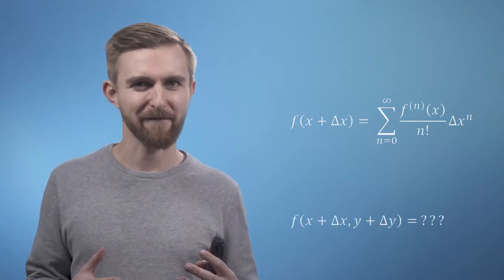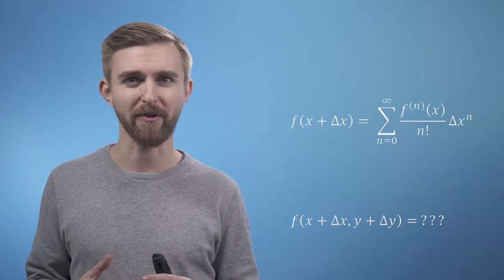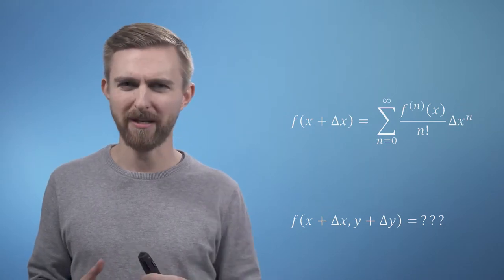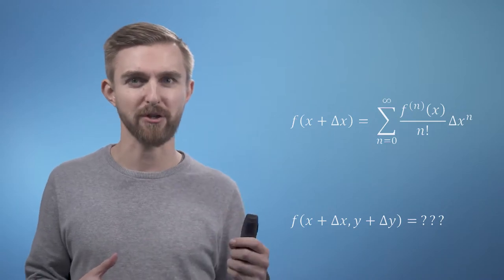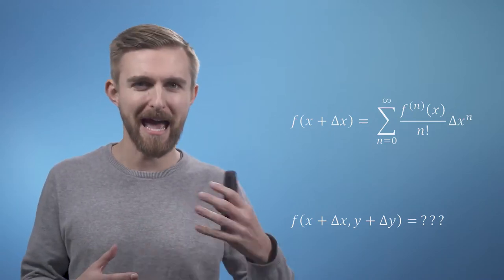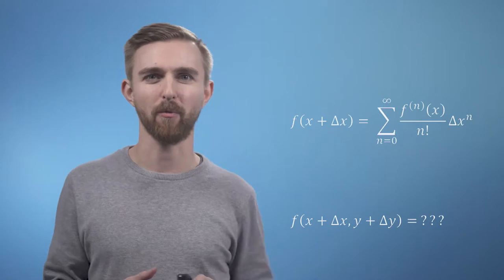So keeping in mind our one-dimensional expression, let's start by looking at the two-dimensional case, where f is now a function of the two variables x and y. So our truncated Taylor series expressions will enable us to approximate the function at some nearby point, x plus delta x, y plus delta y.